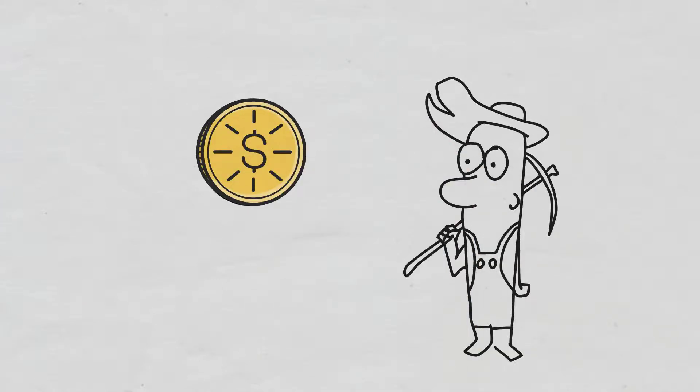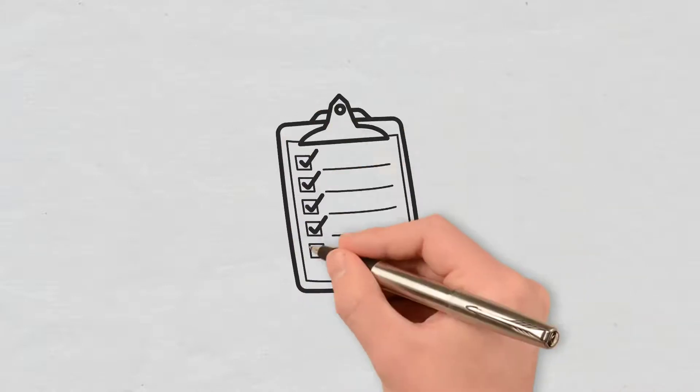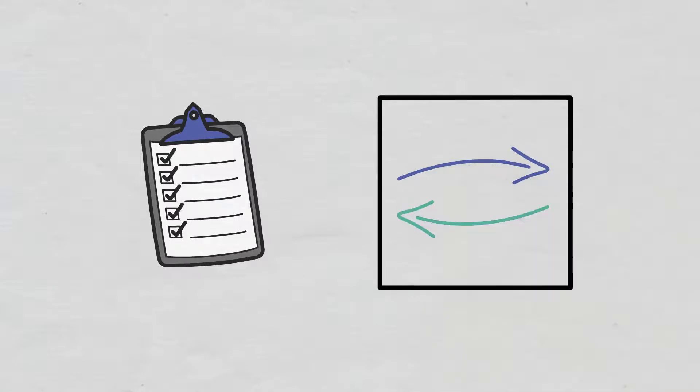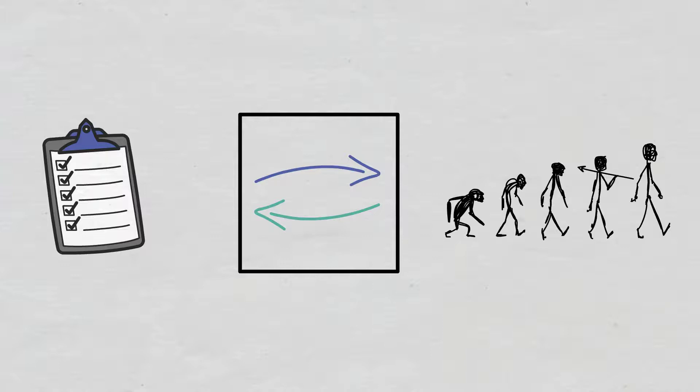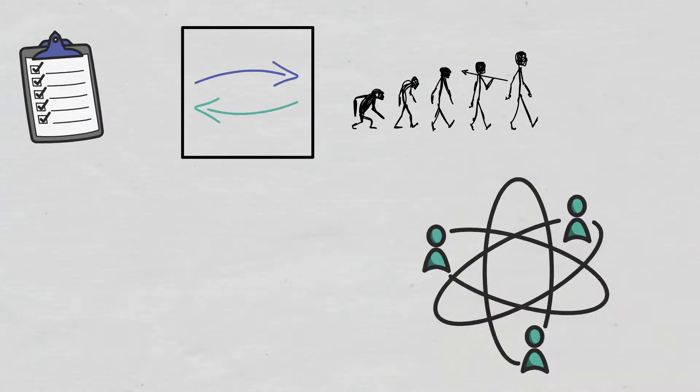Furthermore, this consensus mechanism is in charge of verifying the transactions from the next block, organizing them in a chronological order, and making sure that the entire network knows that the block was created. Examples include Bitcoin and Litecoin.